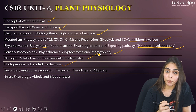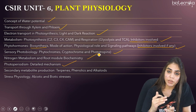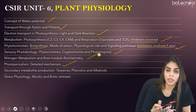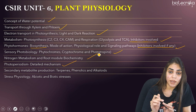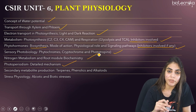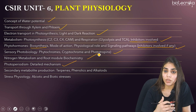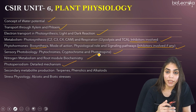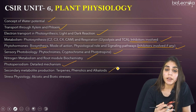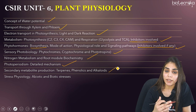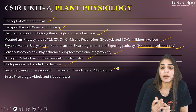The next is secondary metabolite production — terpenes, phenolics, alkaloids, and cyanogenic glycosides. Terpenes and phenolics are asked every year, so do not leave any examples. Also cover alkaloids. The last topic in plant physiology is stress physiology — learn about abiotic and biotic stresses faced by the plant body.